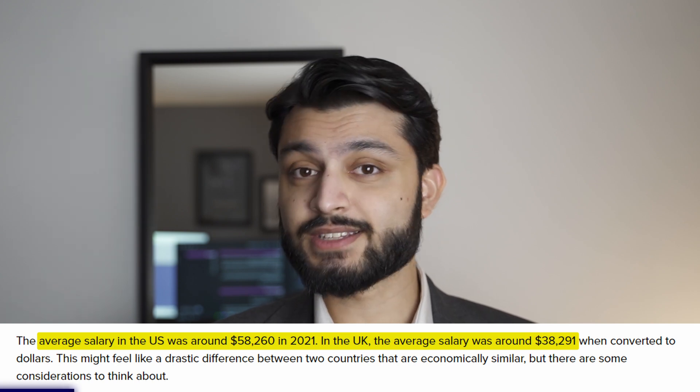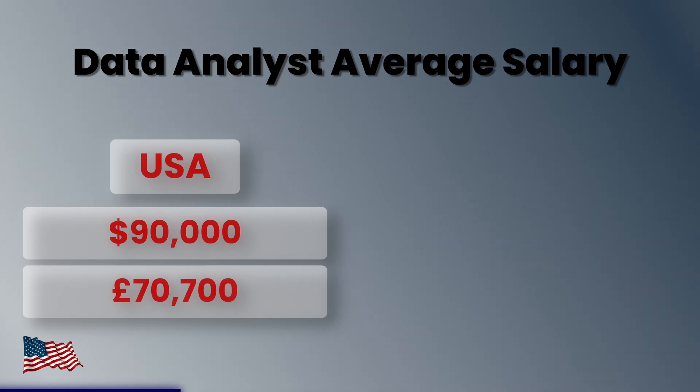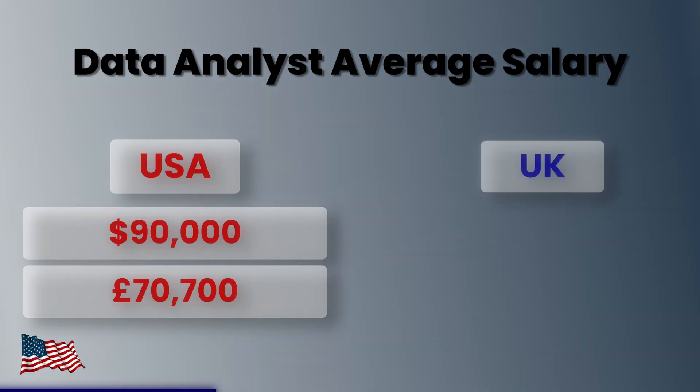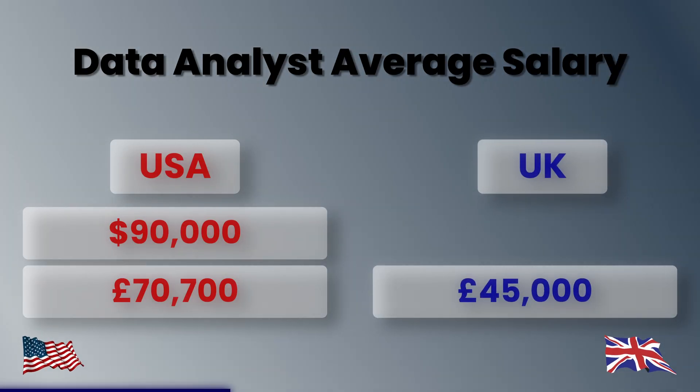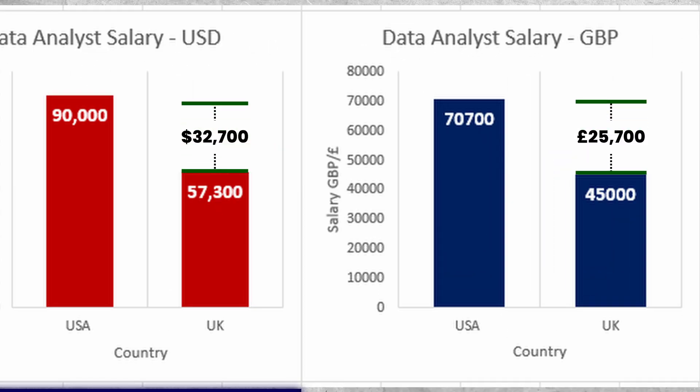The United States has higher base salaries for almost all jobs, and that stands true for data analysts as well. On average the salary for a data analyst in the United States is $90,000, which obviously varies depending on location and company. That translates to a GBP value of £70,700. In comparison, the average base salary for a UK data analyst is £45,000, which translates to a USD value of $57,300. These figures are relative to currency exchange rates, but that's still a pretty severe difference.